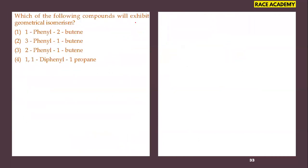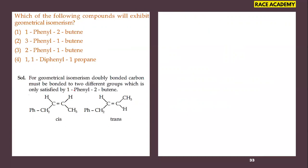Which of the following compounds will exhibit geometrical isomerism? To show geometrical isomerism, a carbon-carbon double bond is required with different groups on each carbon. Among the options, 1-phenyl-2-butene satisfies this condition and shows cis-trans isomerism. The remaining options have the same groups on at least one carbon, so they do not exhibit geometrical isomerism.